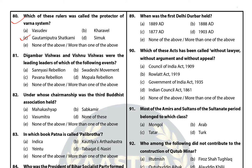Question 81: Digambar Vishwas and Vishnu Vishwas were leaders of which of the following events? The answer is E — None of the above, because they were leaders of the Nil (Indigo) Rebellion.